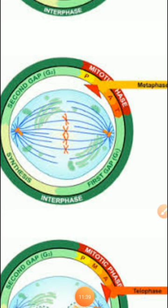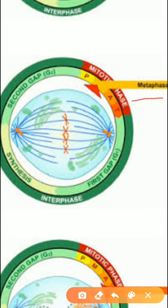The second stage is metaphase. In metaphase, each chromosome gets attached to the spindle fiber by its centromere. The chromosomes are attached with spindle fibers in the central part at the centromere. All chromosomes line up in one plane at the equator — they get arranged in the middle part of the cell.